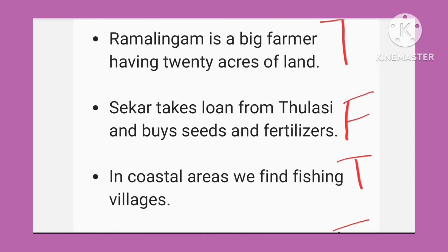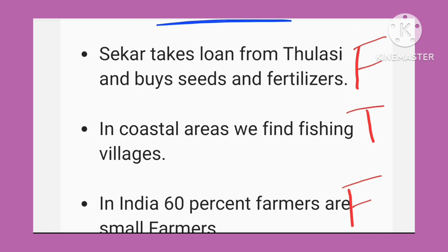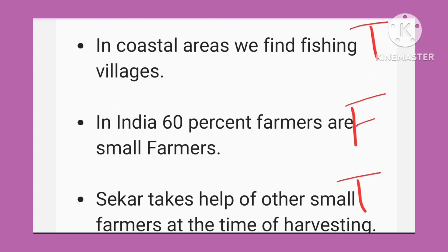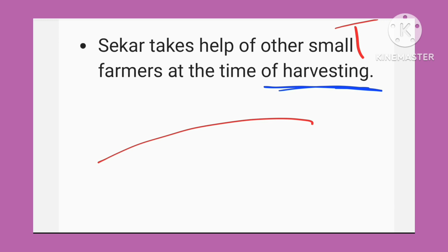Ab True/False dekhte hain. Ramalingam is a big farmer having 20 acres of land — bilkul sahi hai. Shakar takes loan from Tulsi and buys seeds and fertilizers — yeh false hai, kyunki Tulsi khud itni garib hai. In coastal areas we find fishing villages — bilkul sahi hai. In India 60 percent farmers are small farmers — nahi, yeh sahi nahi hai. Shakar takes help of other small farmers at the time of harvesting — bilkul sahi hai.